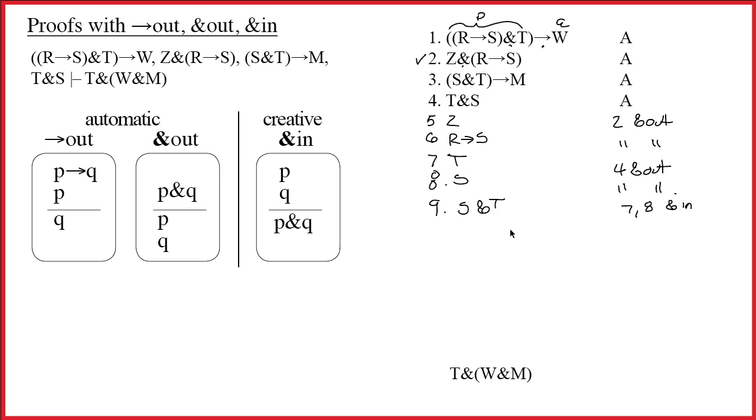I oftentimes say, imagine that it's like you're trying to explain the proof to a computer. And computers are idiots. In fact, the computer you're trying to explain this to only understands three things. And that's these three rules.